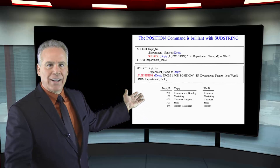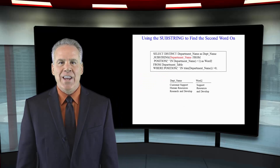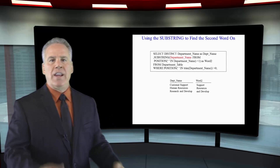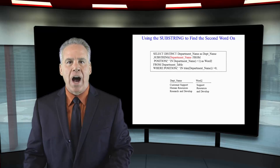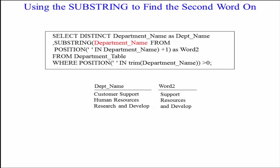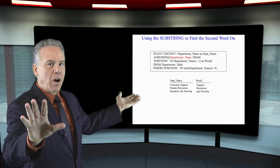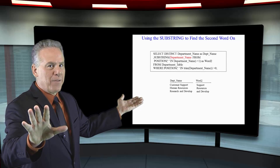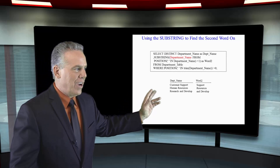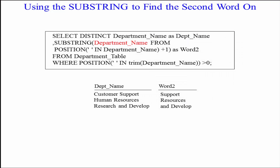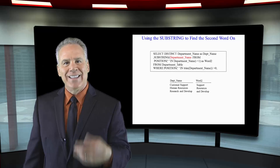Now you're starting to see some real cleverness. In the report, department names with more than one word — such as Customer Support, Human Resources, and Research and Develop — I want only from the second word to the end. To do this, I select department name and SUBSTRING department name from a starting position determined by a subquery: POSITION of the space in department name, plus one, which starts at the second word. Since no ending length is given, it goes to the end.